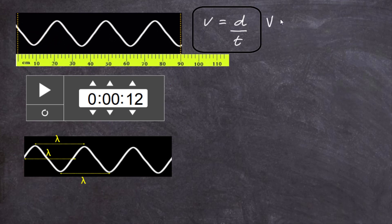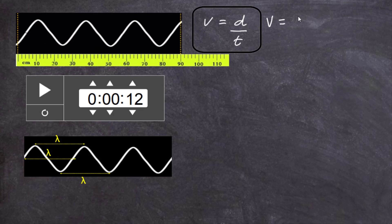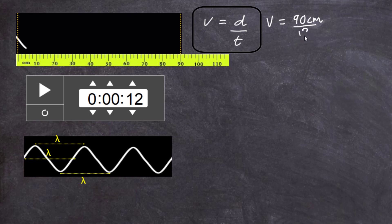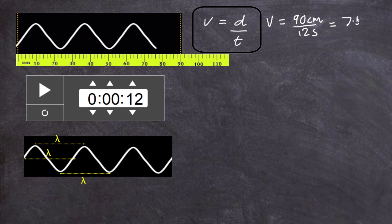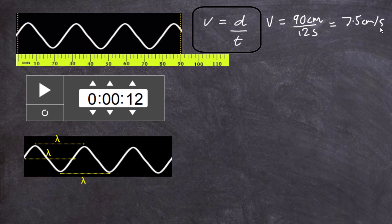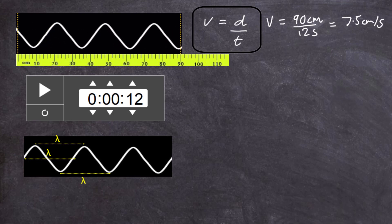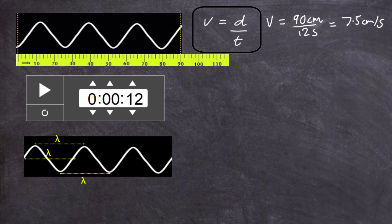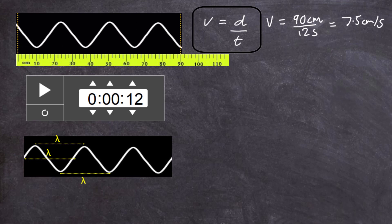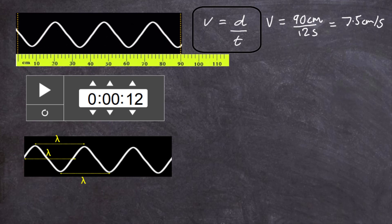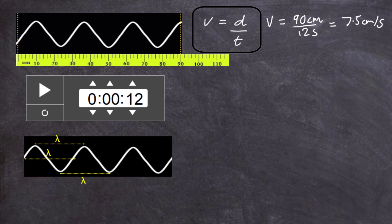Putting in our values: wave speed v equals distance traveled — 90 centimeters — divided by time — 12 seconds. So the wave speed is 90 divided by 12, which gives us 7.5 centimeters per second. We could repeat that experiment multiple times and average the results, but we'll use this first calculation for now.